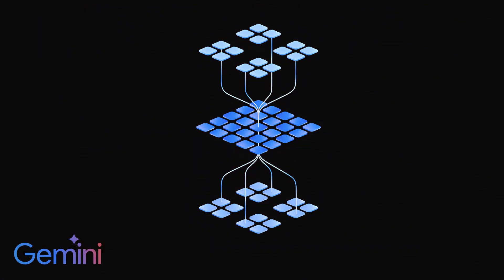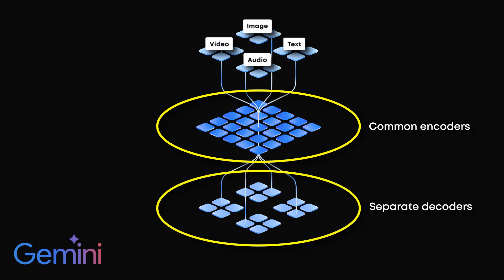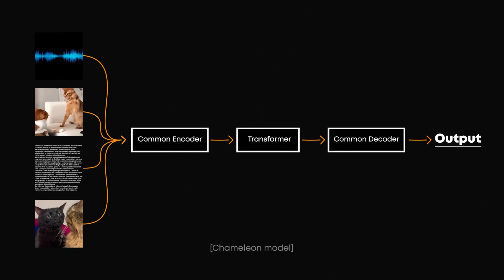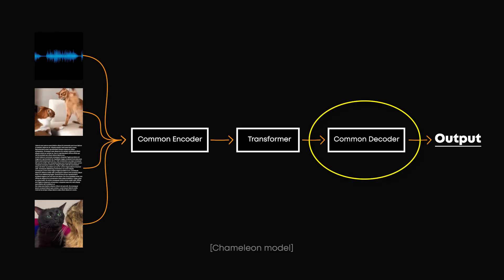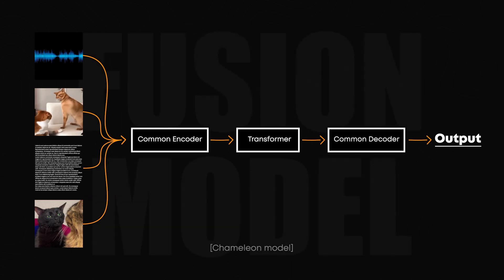Gemini does exactly that — using the same encoding mechanism regardless of whether it's an image or text. But for decoding, Gemini uses separate processes. This is where the new Chameleon model by Meta differs the most: even when decoding, it uses the same decoding mechanism. This makes it a seamless end-to-end multimodal model, which they refer to as a fusion model.